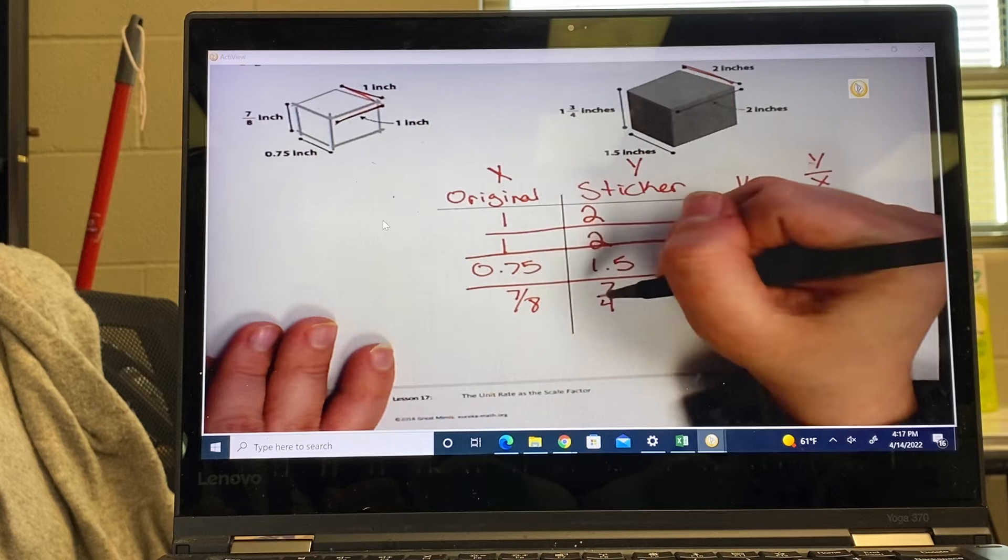So what that means: scaling greater than one. So if your constant is greater than one, it enlarges. Okay, so if the k is bigger than one, it enlarges. If your constant is less than one, it reduces.